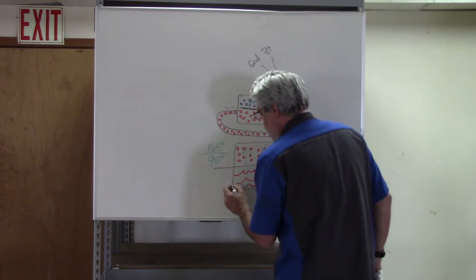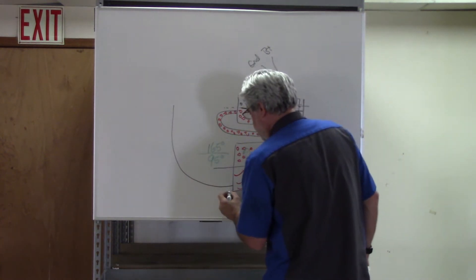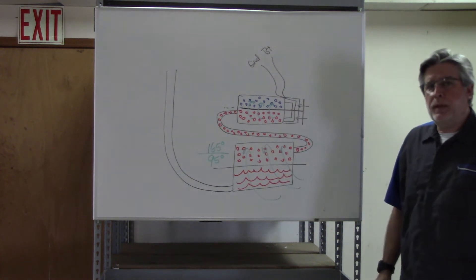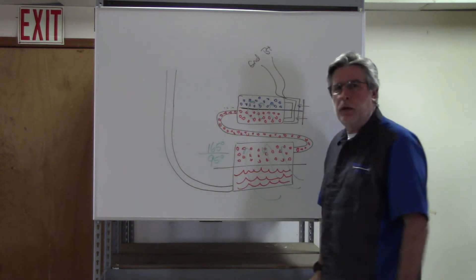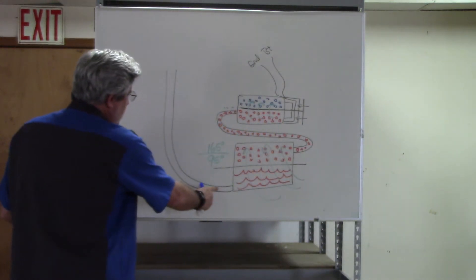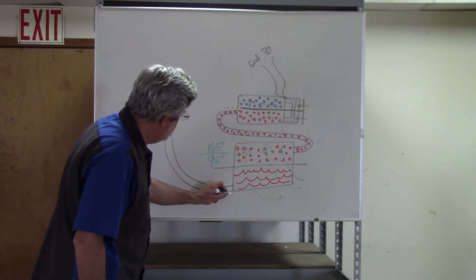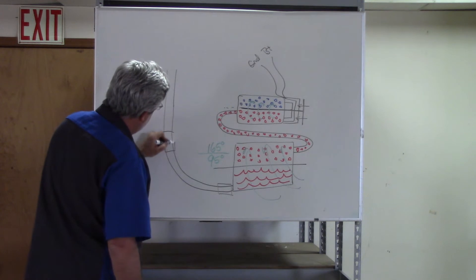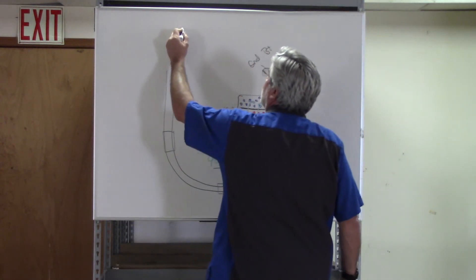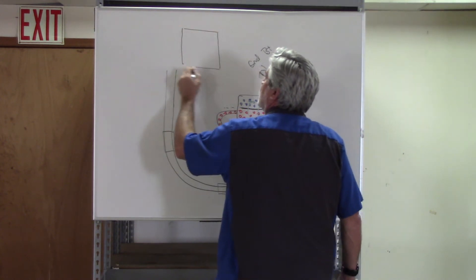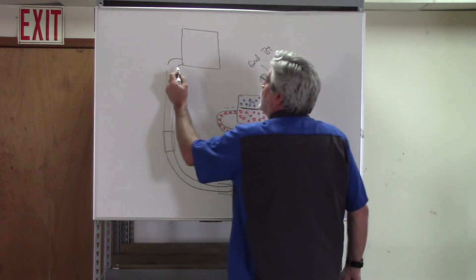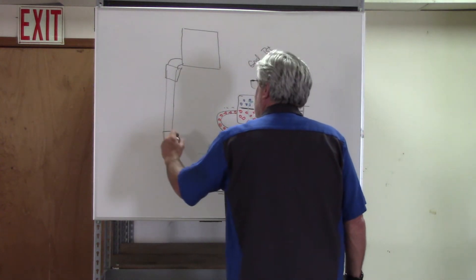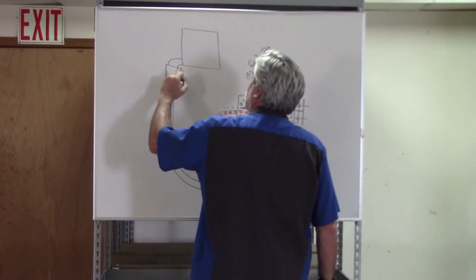Leaving the condenser, moving to our evaporator core. Now I want to stop here for just a second to talk about the orifice tube. Depending on the system, it can be located in one of three places: it can be located in the condenser outlet, fixed in the liquid line, or in the inlet tube to the evaporator core. So we have one of three places — condenser outlet, fixed in the liquid line, or evap inlet.